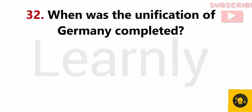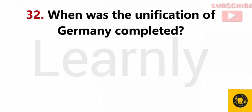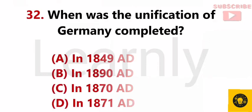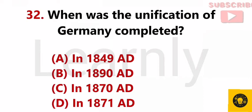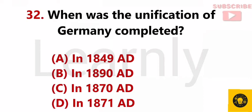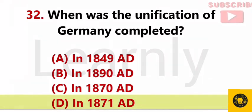When was the unification of Germany completed? Answer D. In 1871 A.D.